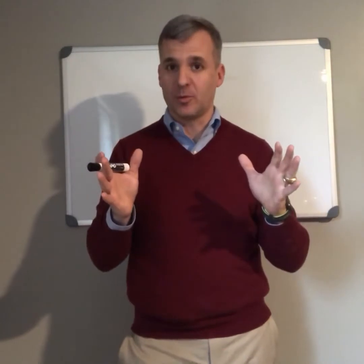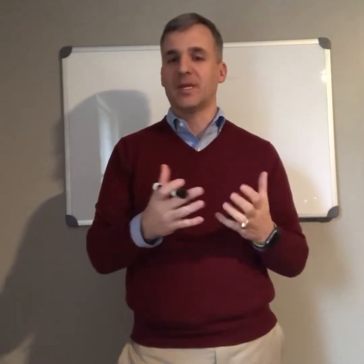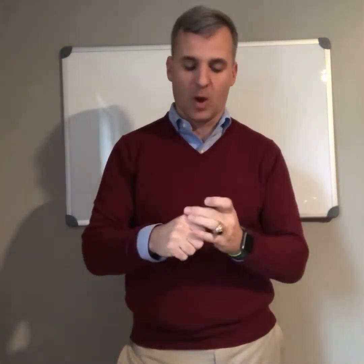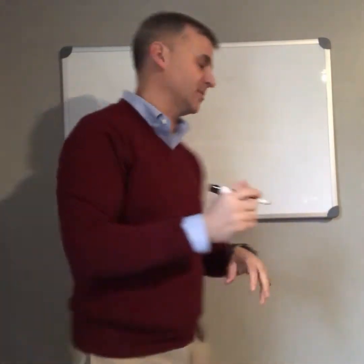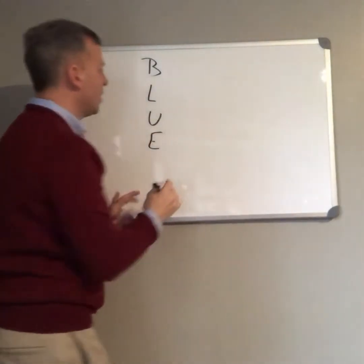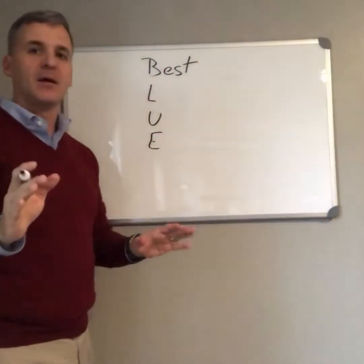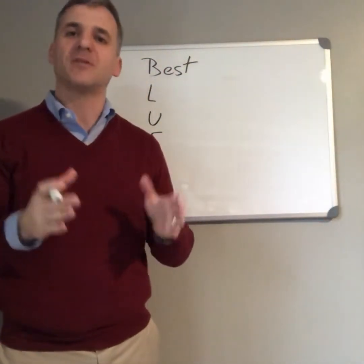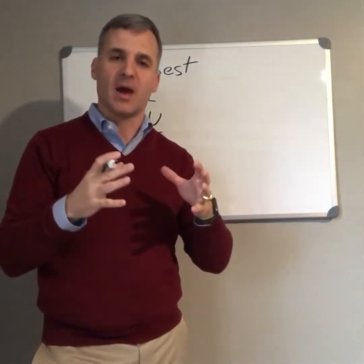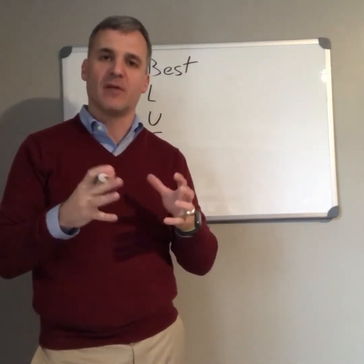Now we don't just want any possible estimation. I could make an estimate based on just a guess, or I can make an estimate based on various information. I want a particular kind of estimate, and the kind of estimate that I want is what we call a BLUE estimate. I know that sounds a little crazy. BLUE — B-L-U-E — stands for Best Linear Unbiased Estimate. So I want the best estimate I can get: the most efficient one, the one that has the least amount of error, the least amount of standard errors. It's our best, most efficient estimate of our population parameters.